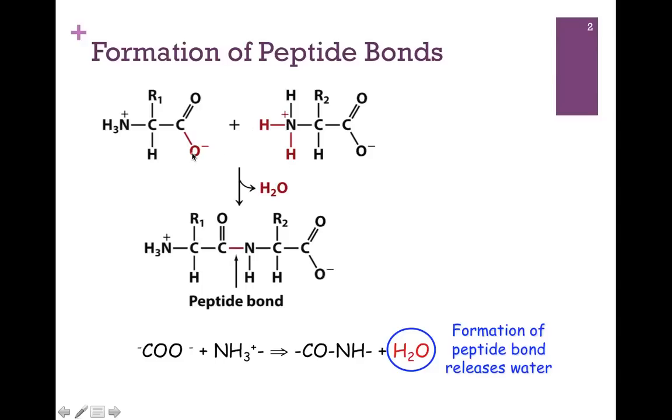Notice the atoms that are highlighted in red. These are the atoms that are lost to form that bond. Notice it's a condensation or dehydration reaction. And here's our peptide bond illustrated here by the red line.